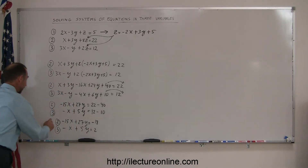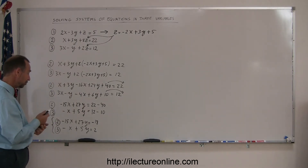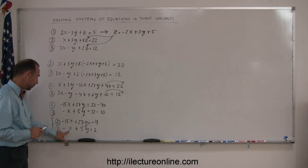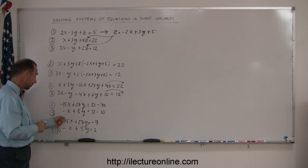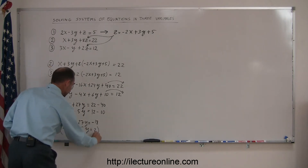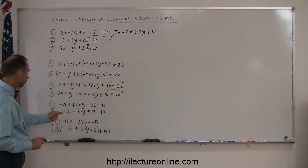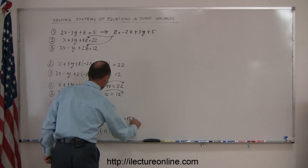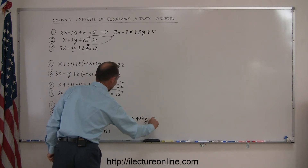Now I have two equations and two unknowns, x and y. I can use any method I like, and it looks like if I multiply the bottom equation by negative 15, I can cancel out the x's. So my strategy is to multiply the bottom equation by negative 15. The second equation stays as minus 15x plus 27y equals minus 18.